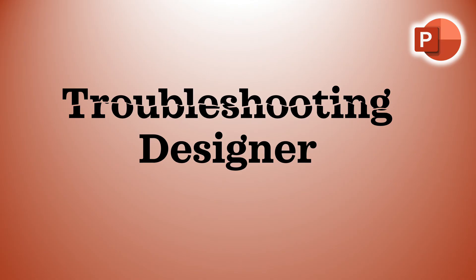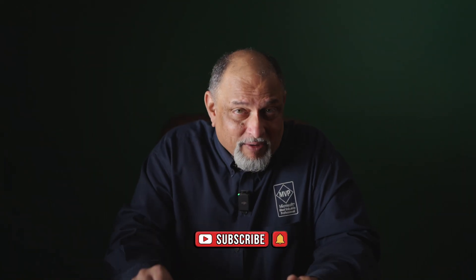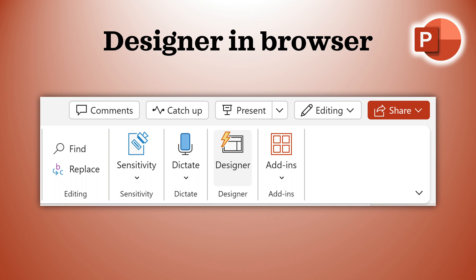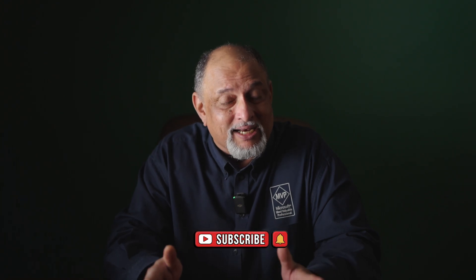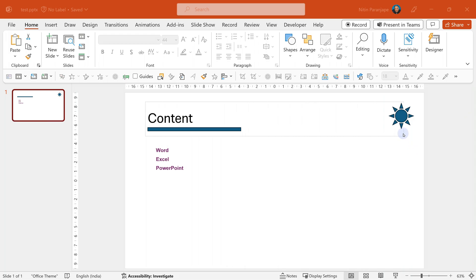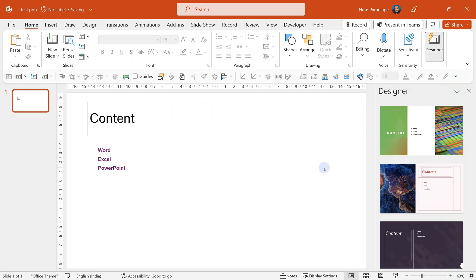Now let's do some troubleshooting, because Designer doesn't always work. The biggest problem is not having the Designer button at all — that means you don't have the subscription or Office Pro Plus version. If you have that, you get the button. If not, and you have an Office 365 subscription, you can also find it in the browser version of PowerPoint. Sometimes the button is there but disabled. First reason: Designer requires an internet connection. Another common reason is that the current slide layout is not compatible with what Designer needs, or you've added your own text boxes, shapes, or objects on top of the layout — then Designer may not work.